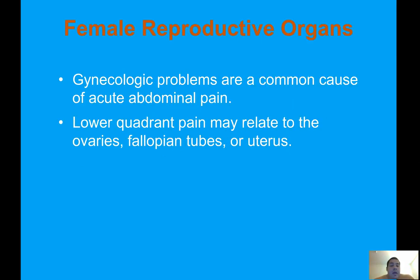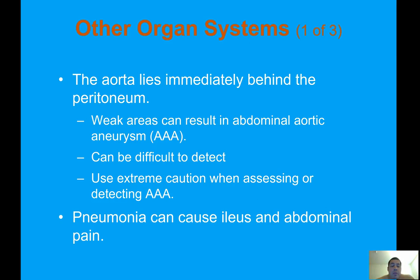Female reproductive organs: gynecological problems are a common cause of acute abdominal pain. Lower quadrant pain may relate to the ovaries, fallopian tubes, or uterus. The aorta lies immediately behind the peritoneum; weak areas can result in an abdominal aortic aneurysm, or AAA, which can be difficult to detect. Use extreme caution when assessing. A symptom of AAA may be a golf ball-sized lump in the stomach or lower back.